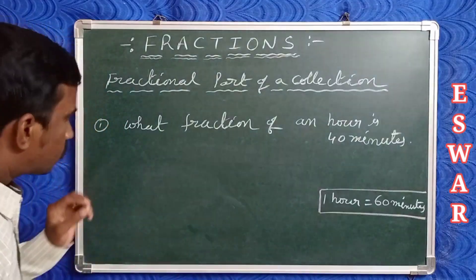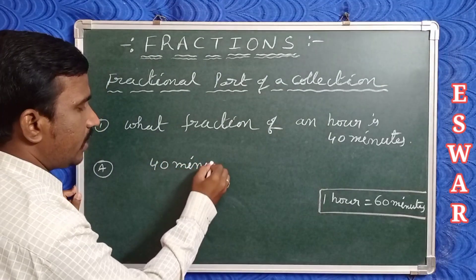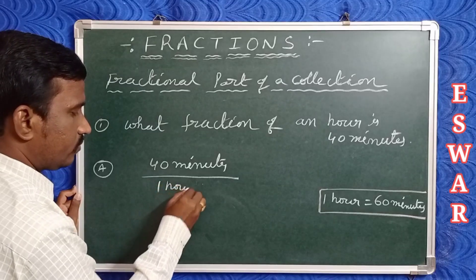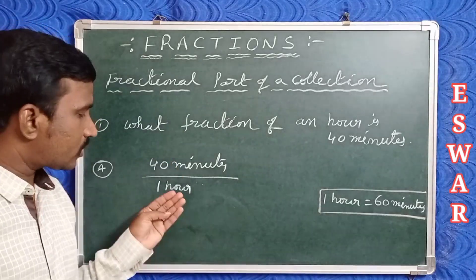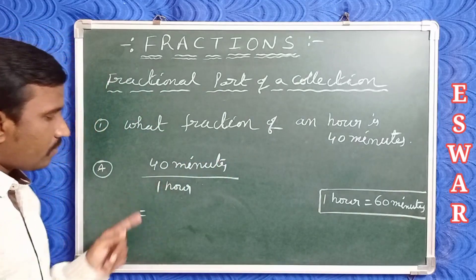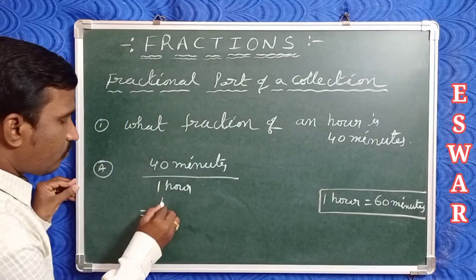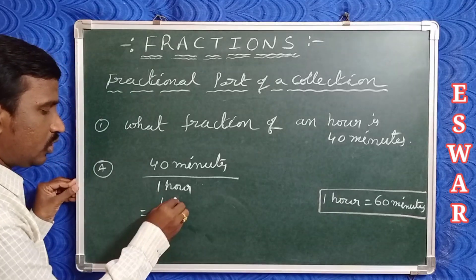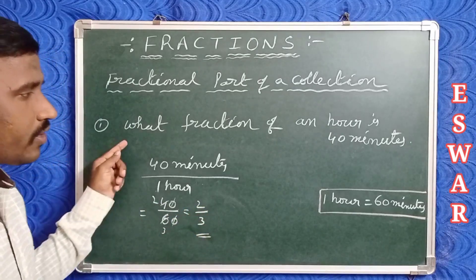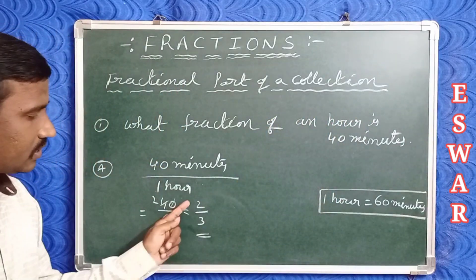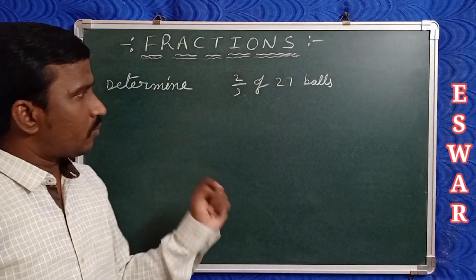Now observe this example: what fraction of an hour is 40 minutes? The numerator will be 40 minutes and the denominator will be one hour. But in a fraction both units must be the same, so convert one hour to minutes: one hour equals 60 minutes. So we get 40 minutes by 60 minutes — cancel zeros: that gives two by three. So 40 minutes is two thirds of an hour.